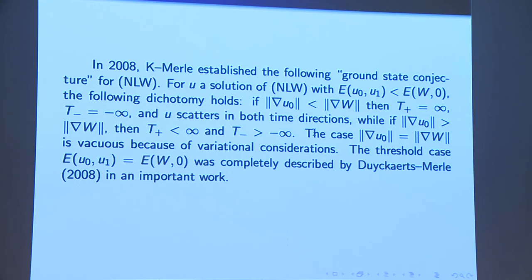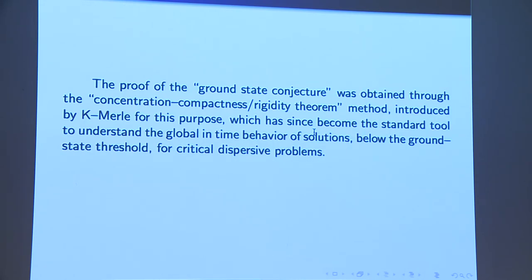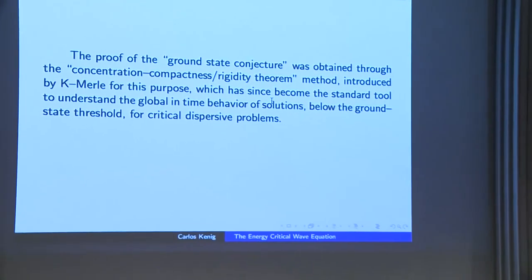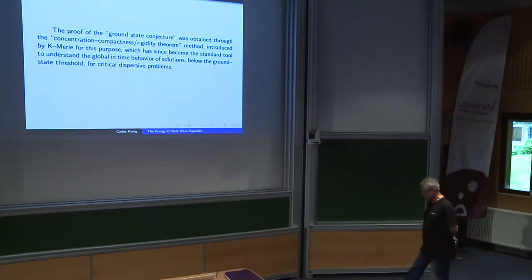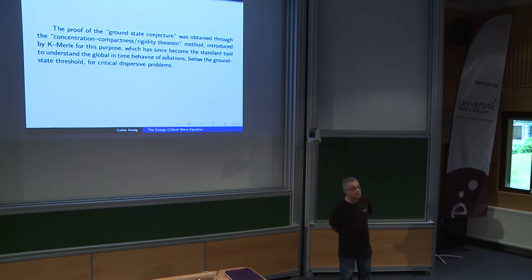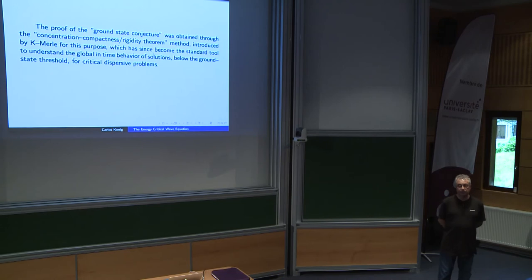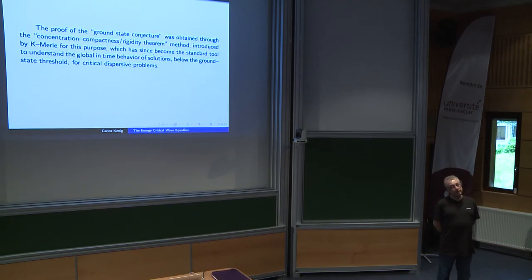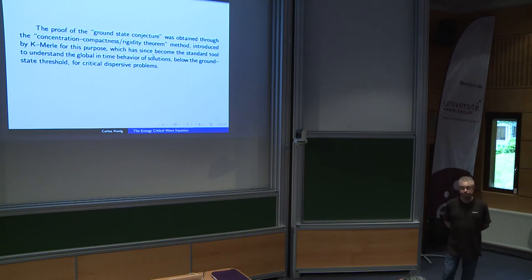So the part of the energy space where the energy is smaller than the energy of W can be completely understood dynamically. There is also a threshold case when the energy equals the energy of W, completely described in the work of Duyckaerts and Merle. In our proof of the ground state conjecture, we developed a method to study the long-time behavior of solutions to critical dispersive equations — working in defocusing cases and in focusing cases below the ground state threshold.